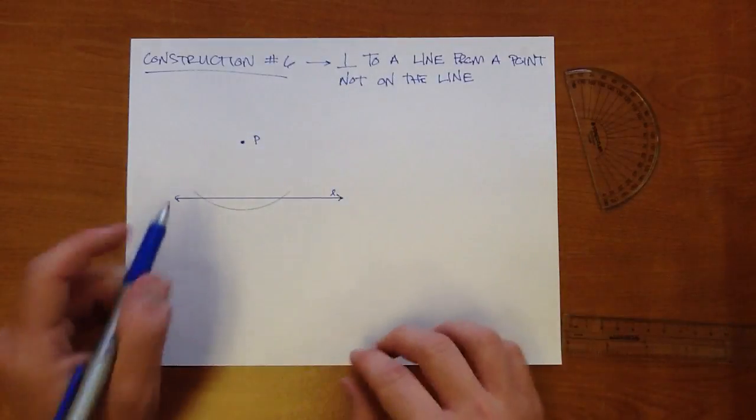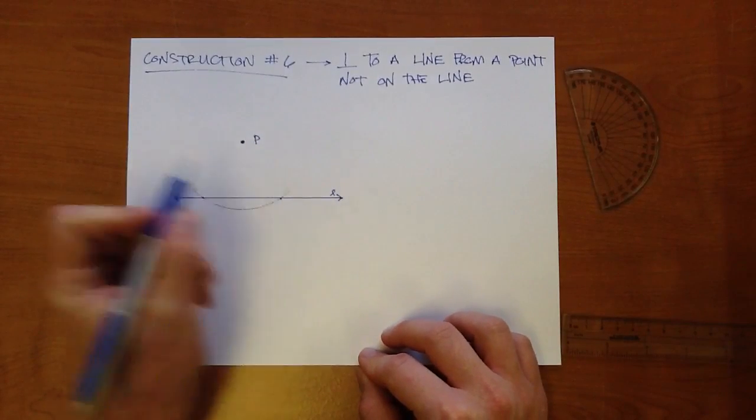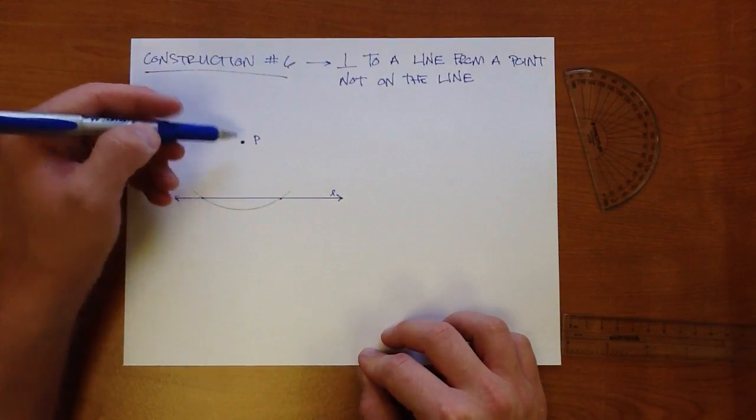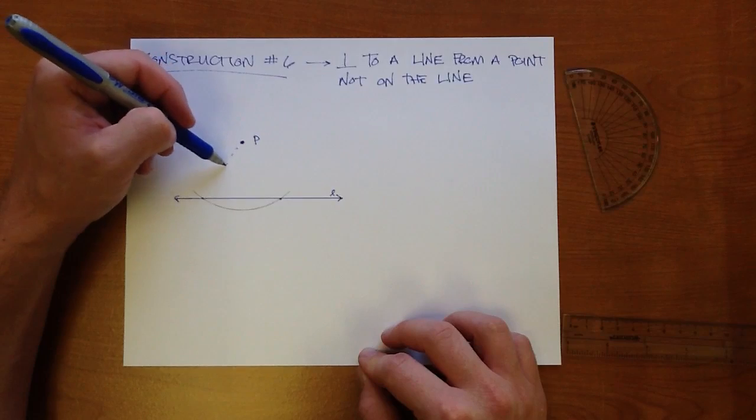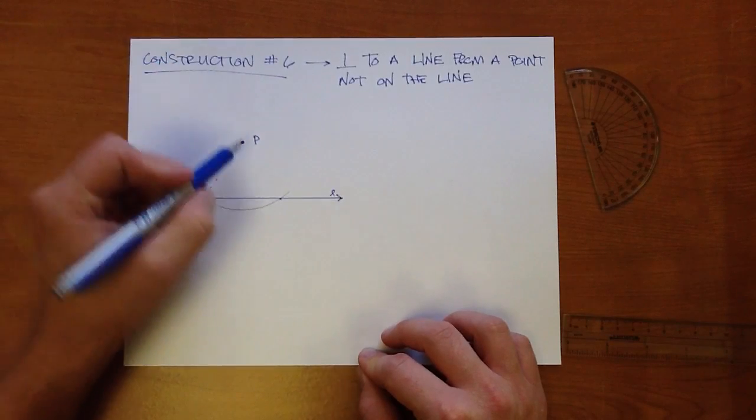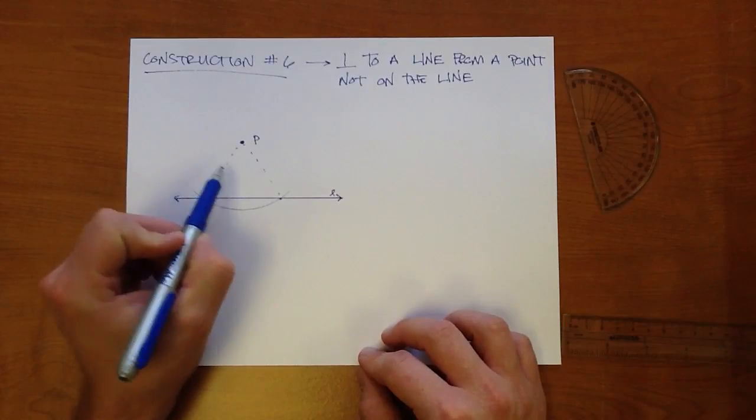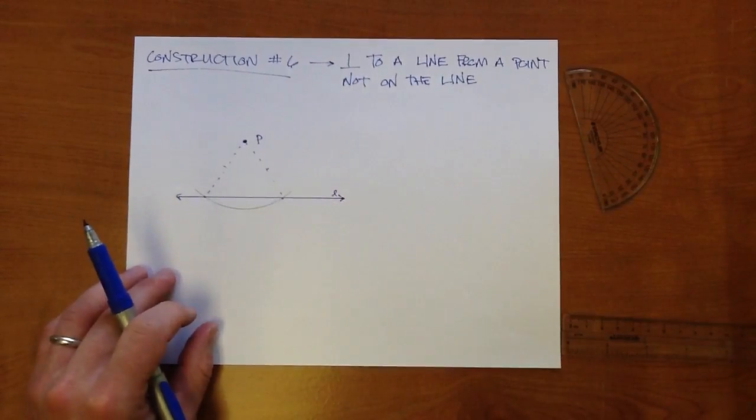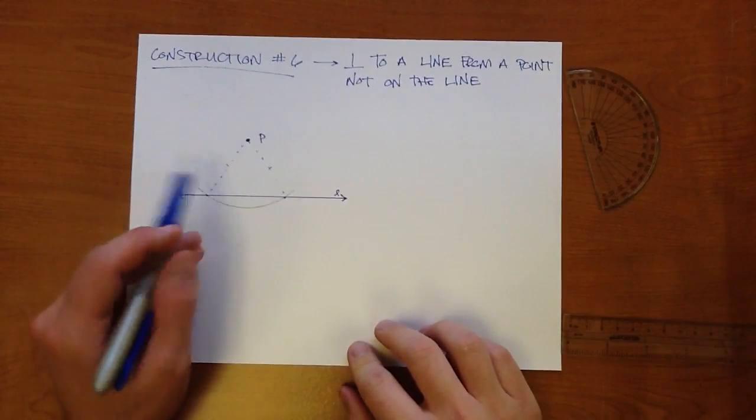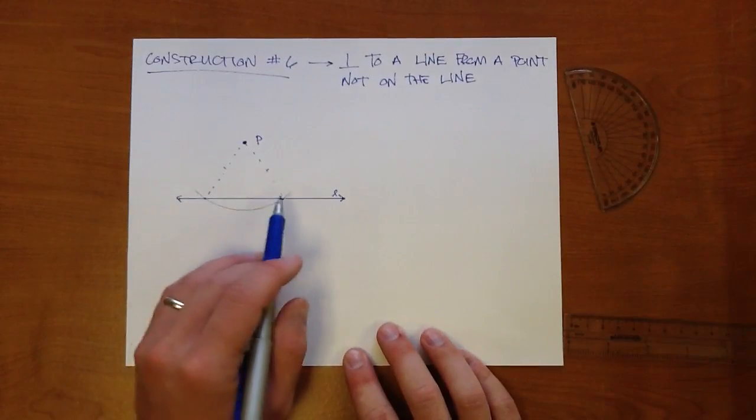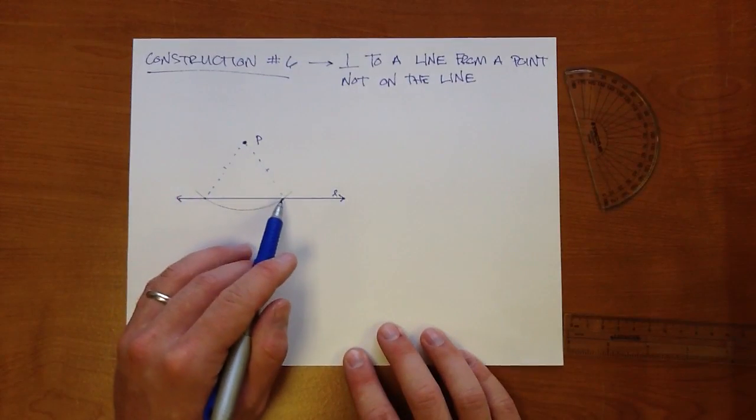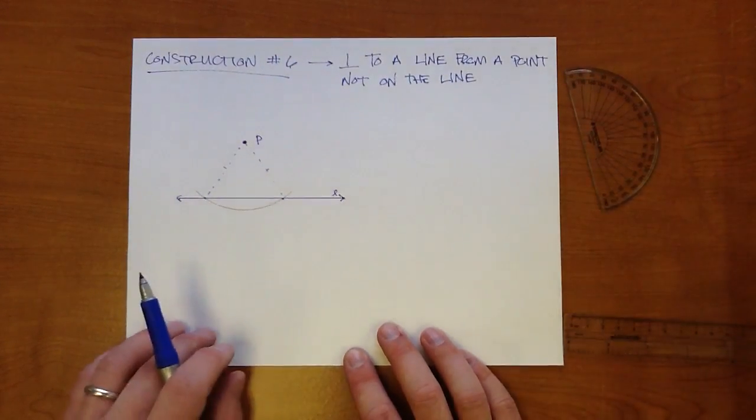So what we've done is we've created a point, a point, and then this point P, if you draw kind of dotted lines here, from point P to each of those intersections, these segments are going to be the same length because this is a radial distance. You basically have said this is part of a circle, and the distance from the center of the circle to any point on the circle is the same length.